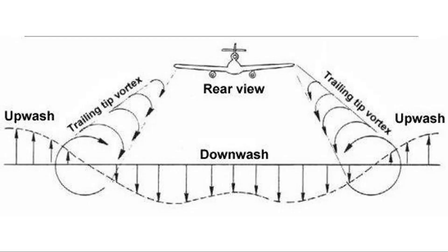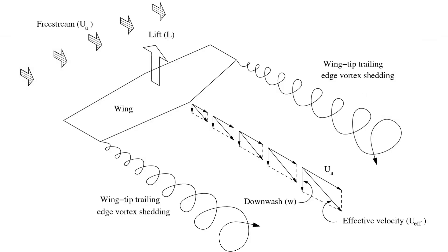Looking at the airplane from the rear as it sheds these trailing edge vortices, in between these vortices the flow is directed downward. This is known as downwash. Hence we have a velocity component in the downward direction at the wing. This small velocity component, known as downwash, is denoted by W.